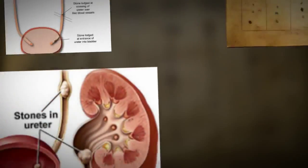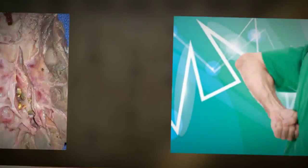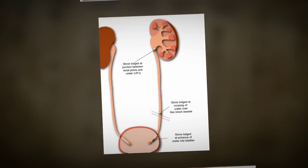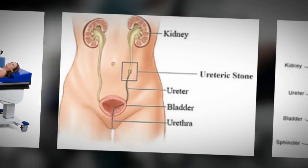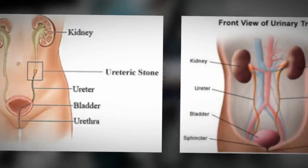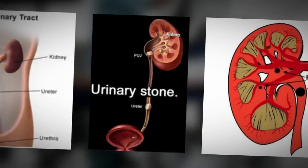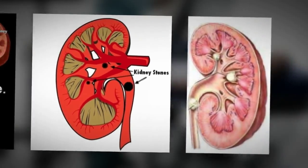There are two types of shock wave machines: with one machine the patient sits in a tub of water, and with the other the patient lies on a table. Another method uses a ureteroscope — a long wire with a camera attached — which is inserted into the patient's urethra and passed up through the bladder to the ureter where the stone is located.